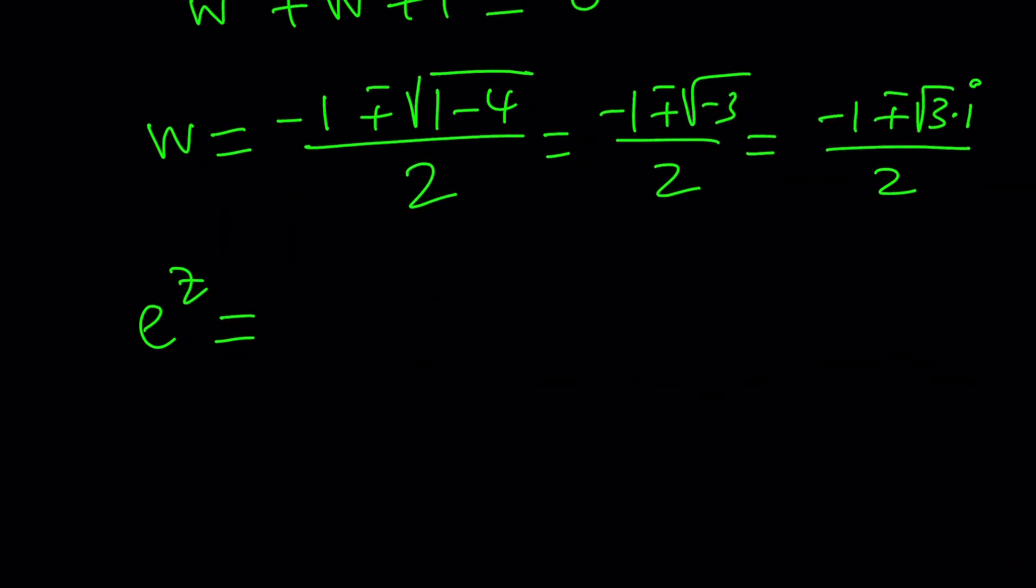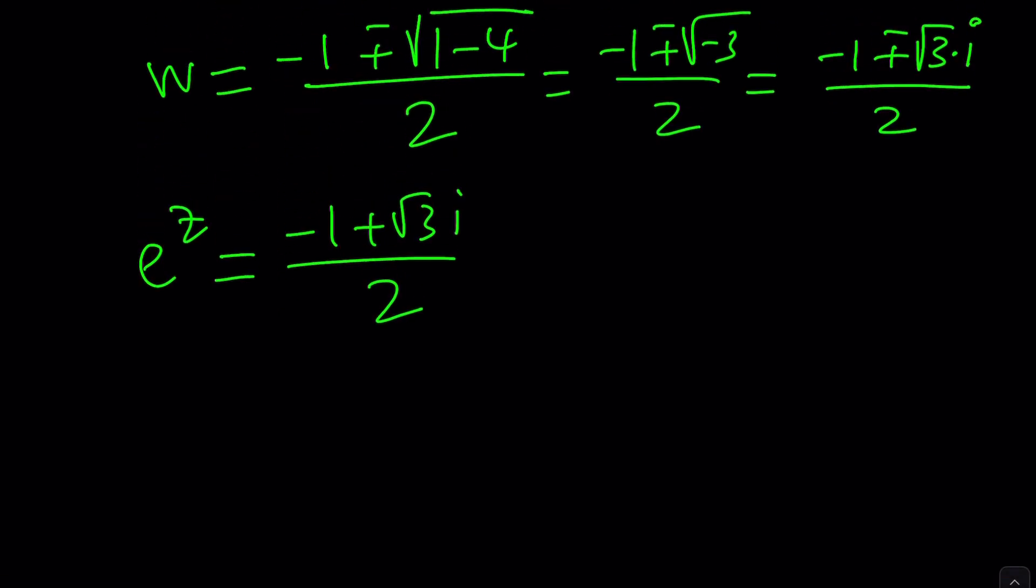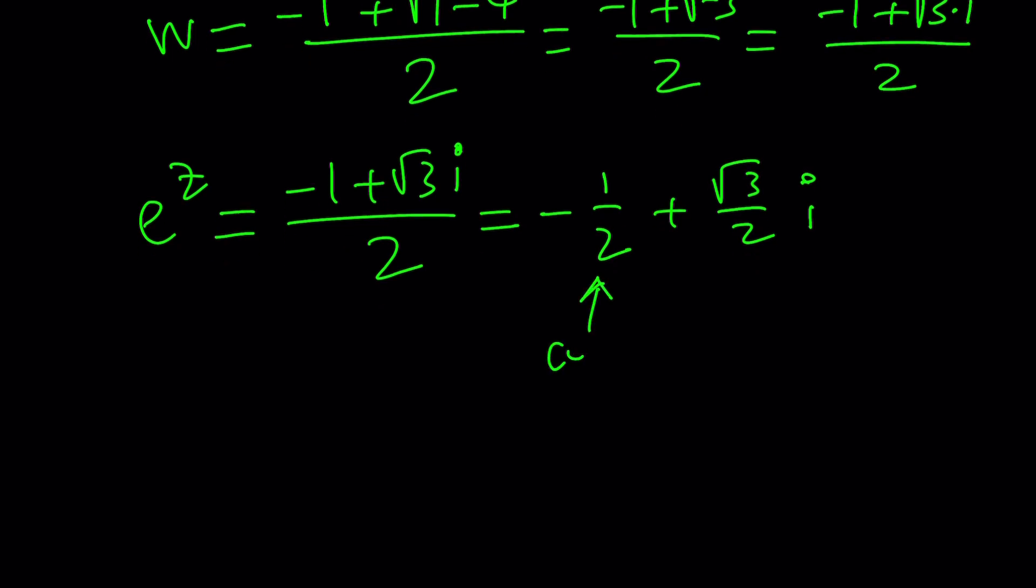e to the z, let's just start with this one. And then we can look at the negative one later, or it's just going to be super similar and you can just do it yourself. And I want to write this as negative one half plus root 3 over 2i. Now these numbers should be familiar to you if you've done a little bit of trigonometry with the right triangle, or maybe on the unit circle.